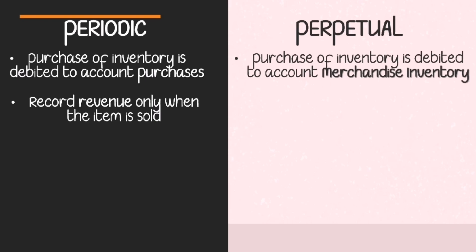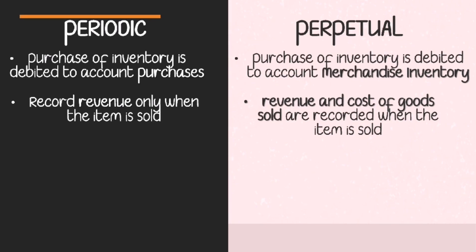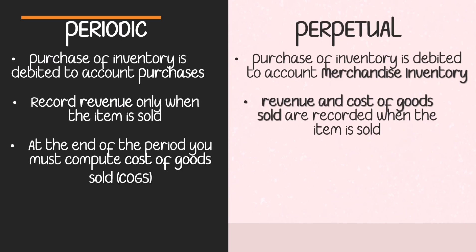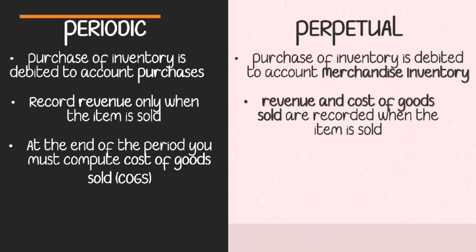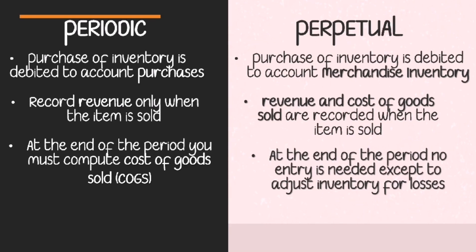In the periodic system, only revenue is recorded when an item is sold — we debit cash or accounts receivable and credit sales. In the perpetual system, both revenue and cost of goods sold are recorded when the item is sold. Additionally, in the periodic system, cost of goods sold must be computed at the end of the reporting period, while in the perpetual system, no such computation is needed since cost of goods sold is recorded every time an item is sold.